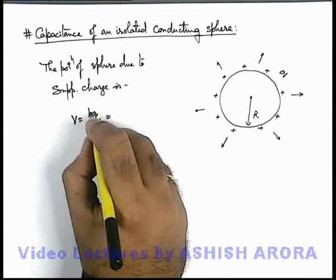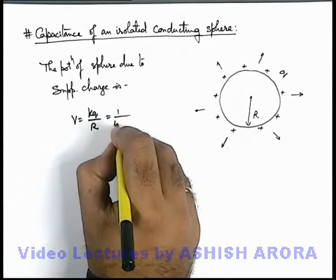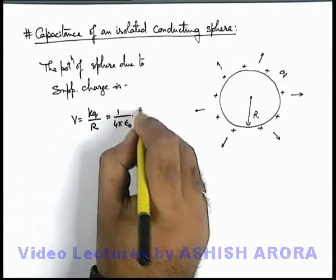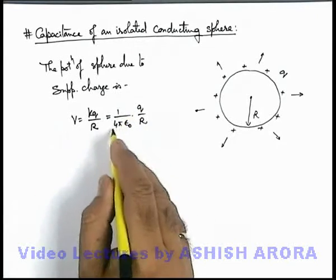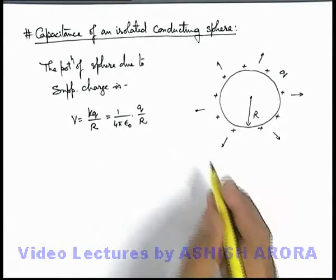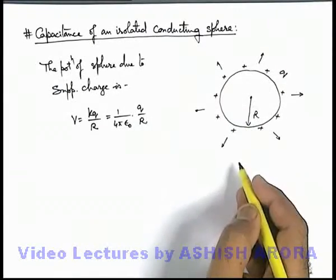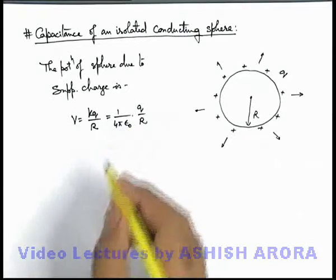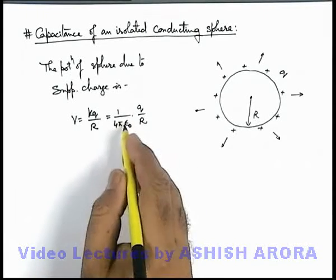Here, this electrostatic constant k can be written as 1/(4π ε₀) times q/r. We can write k as 1/(4π ε₀) if the surrounding is free space only. If there is some medium, we will also include relative permittivity along with ε₀.